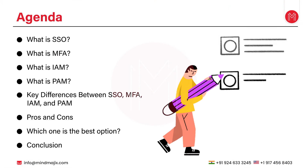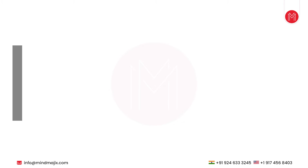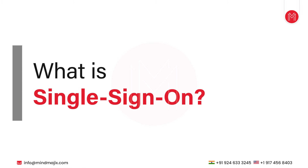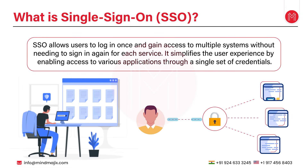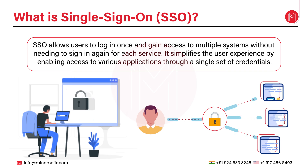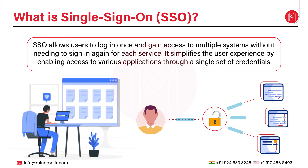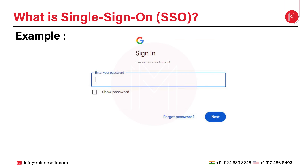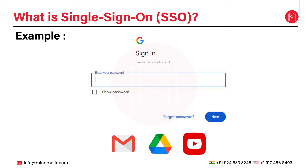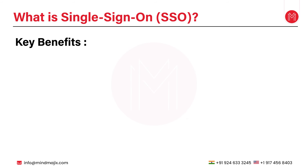The first point is what is single sign-on or SSO. SSO allows users to log in once and gain access to multiple systems without needing to sign in again for each service. It simplifies the user experience by enabling access to various applications through a single set of credentials. For example, imagine logging into Google and without needing separate passwords, you can easily access Gmail, Google Drive, and YouTube seamlessly.